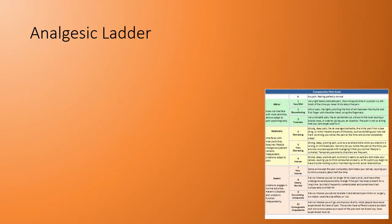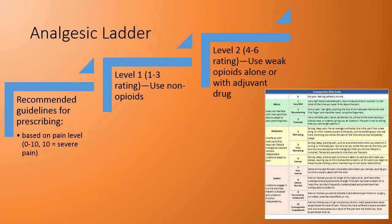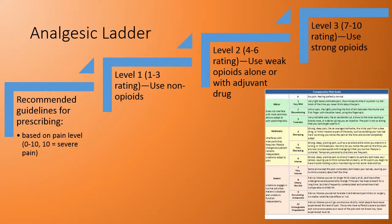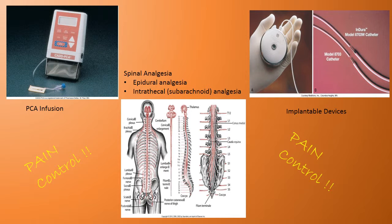The analgesic ladder provides recommended guidelines for prescribing pain medications based on a pain level of 0–10. Level 1 (pain rating 1–3): prescribe a non-opioid. Level 2 (pain rating 4–6): use a weak opioid alone or with an adjuvant drug. Level 3 (pain rating 7–10): prescribe strong opioids. Other mechanisms for pain control include PCA infusions, spinal analgesias, and implantable devices.